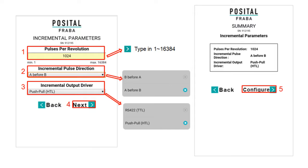Then you will see the figures shown on the screen. Fill in the blank for pulses per revolution — type in a value from 1 to 16384. Choose the incremental pulse direction and select the incremental output driver. Then click Configure after confirmation.